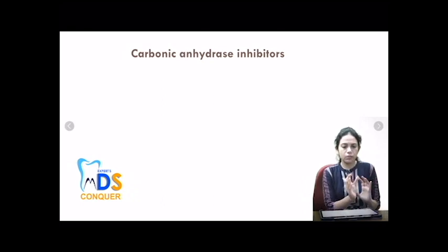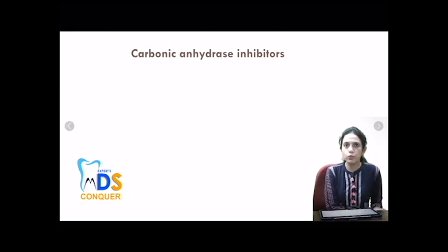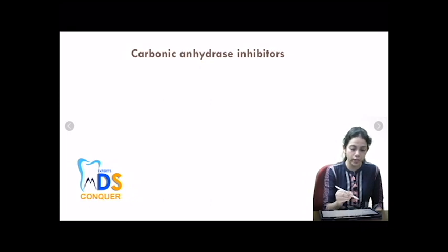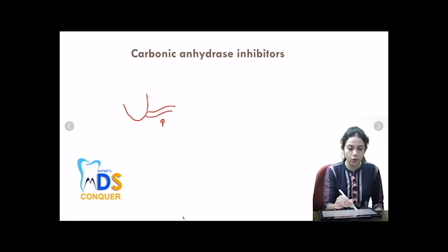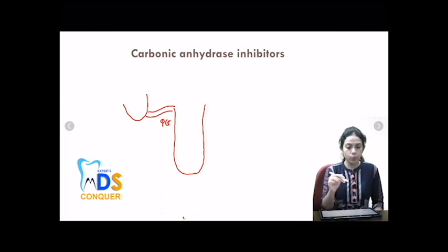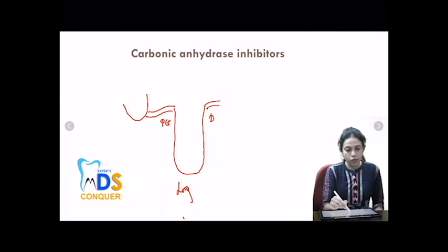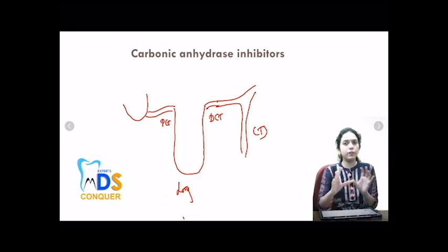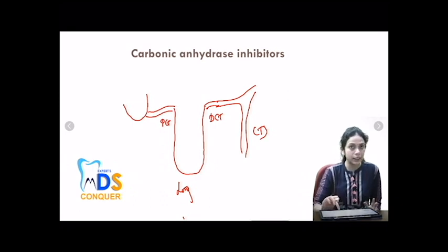I'll give you a brief idea of the structure of the nephron. The nephron has a proximal Bowman's capsule, a proximal convoluted tubule, a descending and ascending loop of Henle, a distal convoluted tubule, and a collecting duct. This is the simple or basic structure of the nephron.